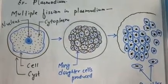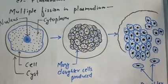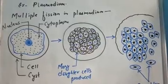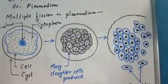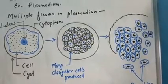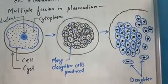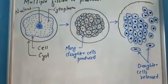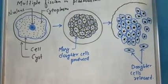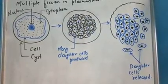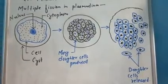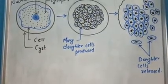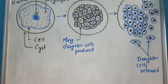जब यह थोड़ा mature होता है तो कई सारे daughter cells को बना देता है, लेकिन अभी favorable condition नहीं आया है — daughter cells इसके अंदर बने हुए हैं। Cyst के breakdown होने से बहुत सारे daughter cells जो इसके अंदर होते हैं, सारे बाहर आ जाते हैं और release हो जाते हैं। So, कुछ microorganisms में multiple fission होता है और यह भी asexual reproduction का ही एक type है।